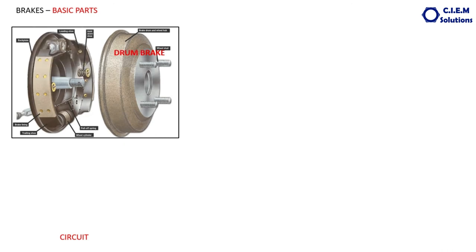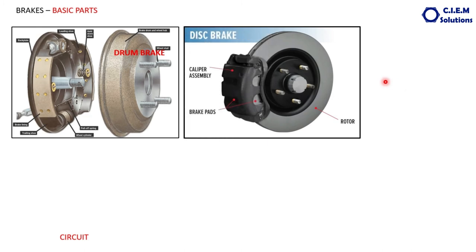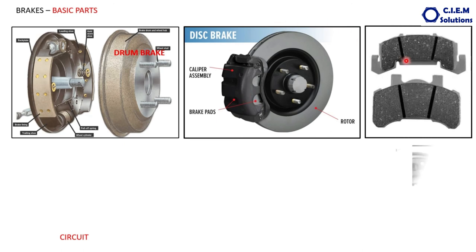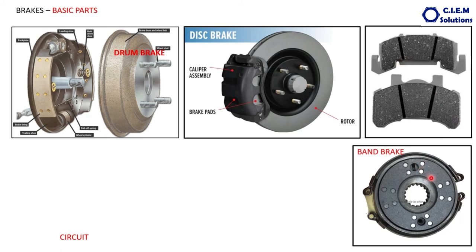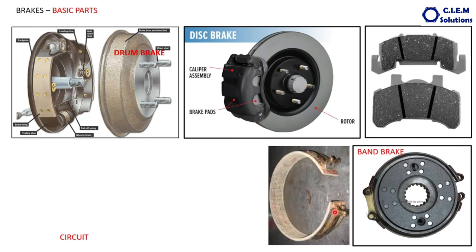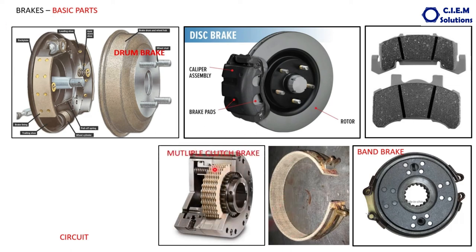The basic parts of a drum brake system include: the rotating brake drum made of cast iron, brake shoes, brake lining with friction material, the wheel cylinder, retention springs, and shoe-holding parts. For disc brakes: the rotating disc, the caliper assembly, and friction pads inside the caliper. For band brakes: a rotating drum with an external band lined with friction material (such as asbestos). For multiple-disc brakes: reaction plates and friction plates.